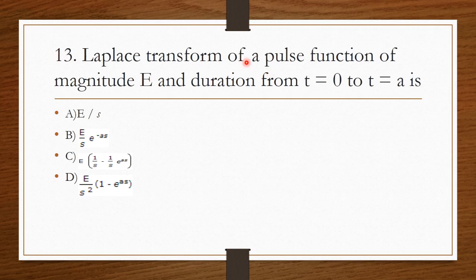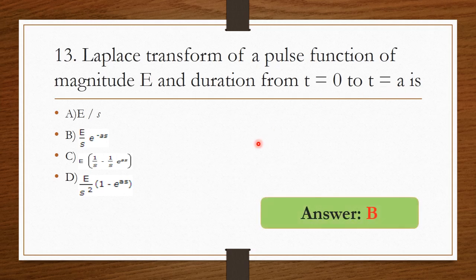The Laplace transform of a pulse function of magnitude E and duration t = 0 to t = a — option B is the right answer: E/s · e^(−as). This is calculated using the Laplace transform formula.